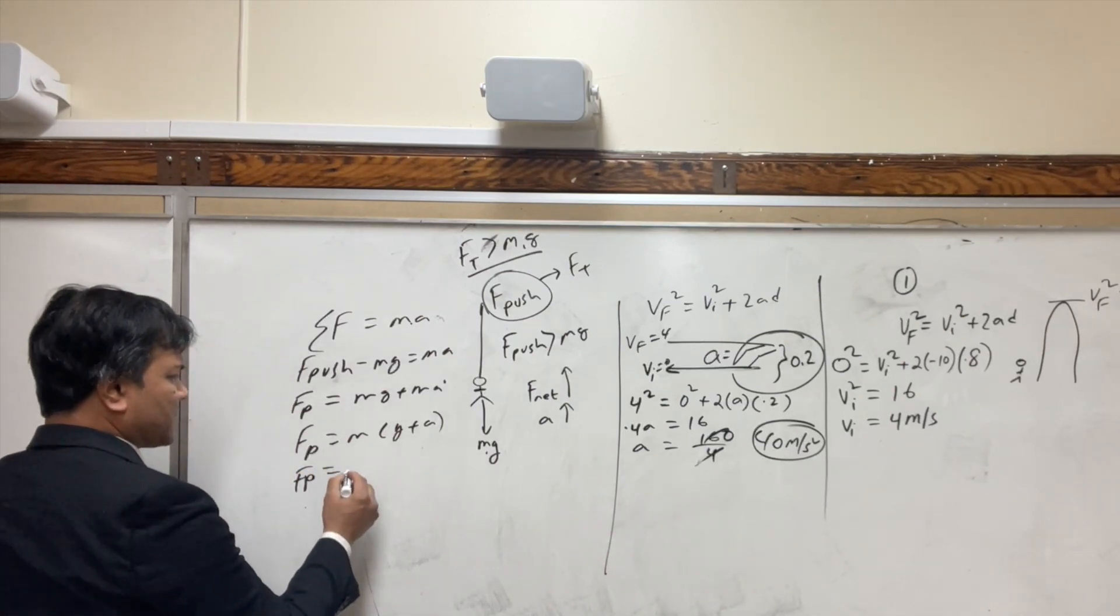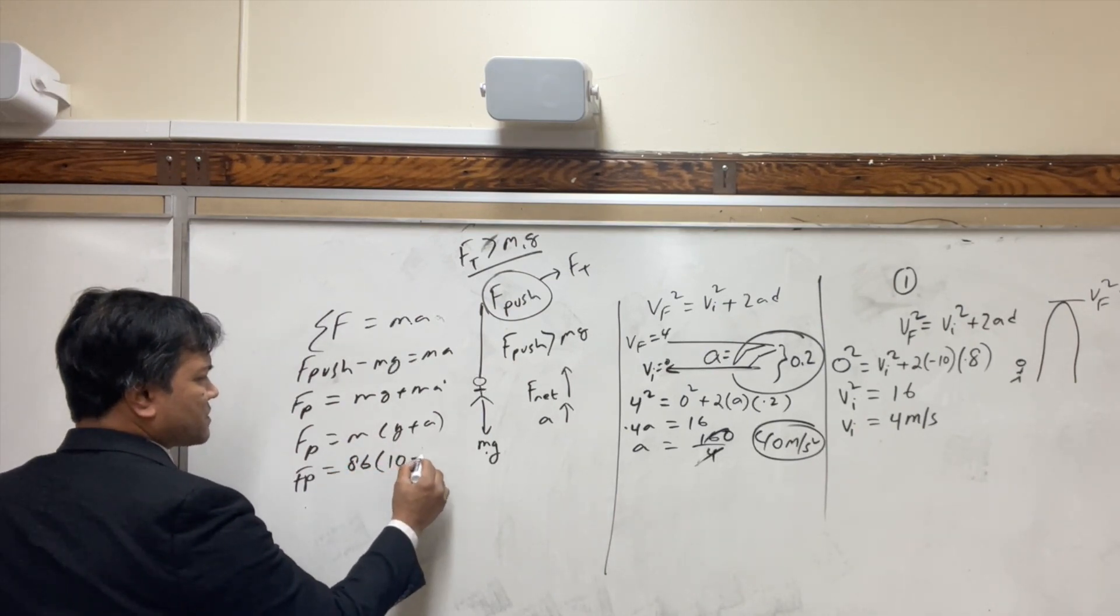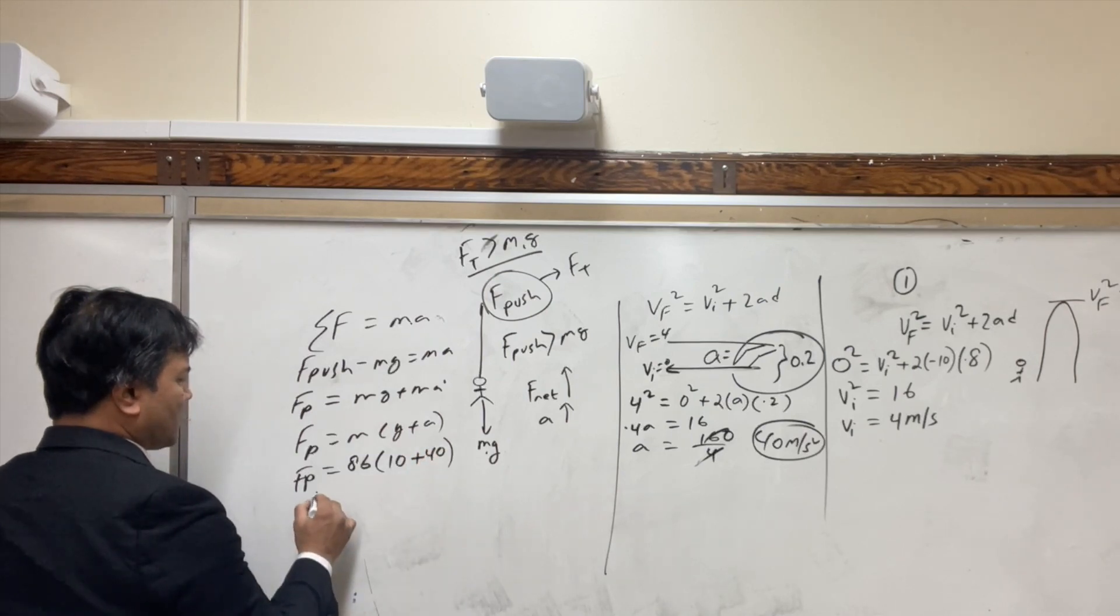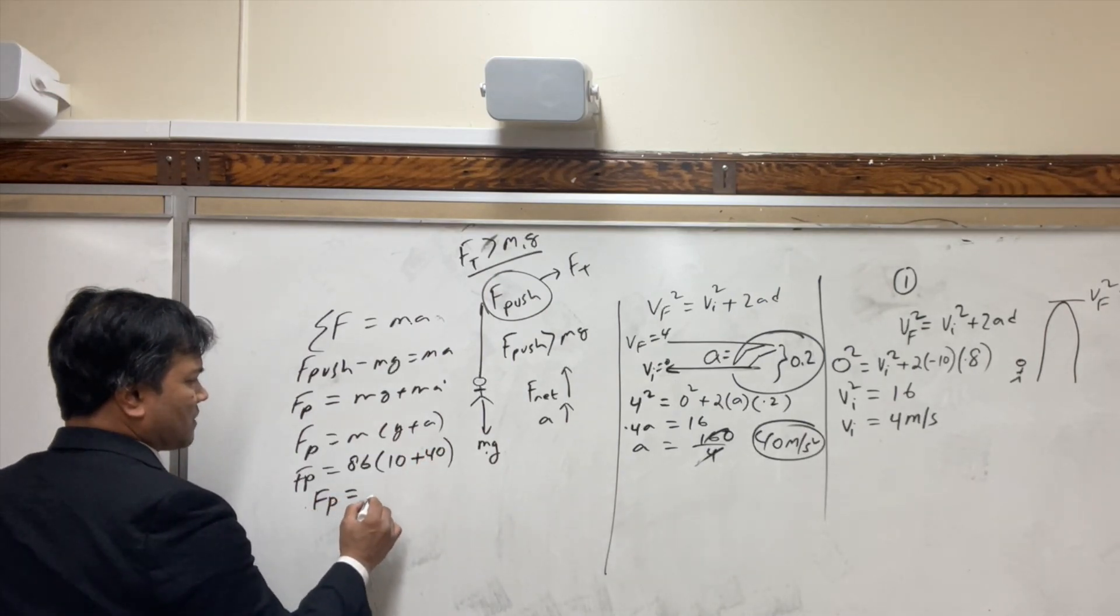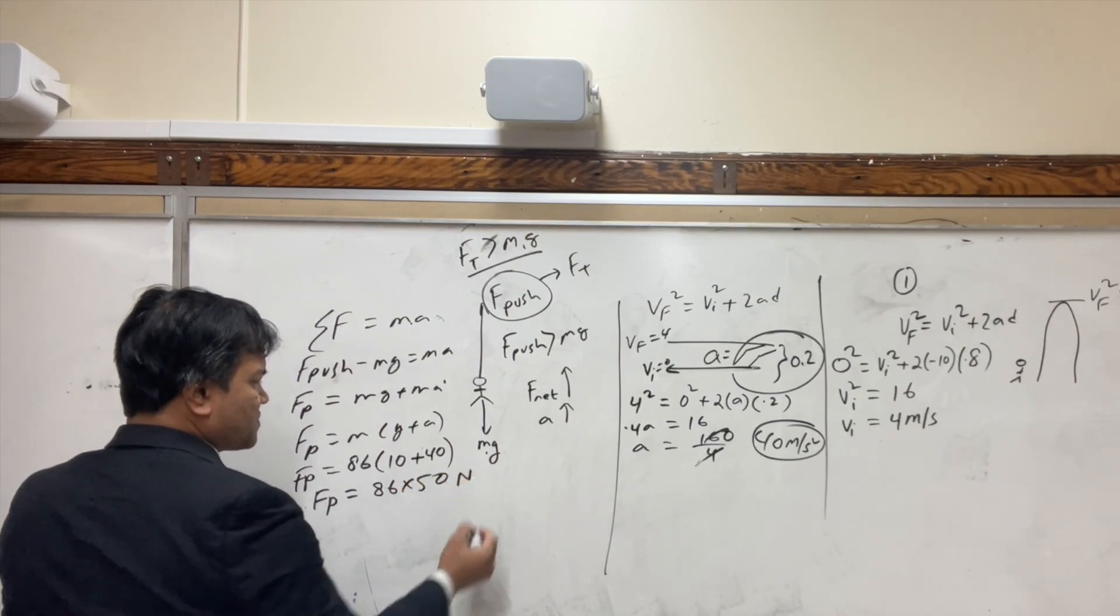I'm 86 kilograms, g is 10, and acceleration is 40. It is 86 times 50, I don't know, 4,300, this much Newtons.